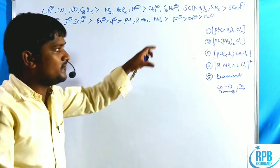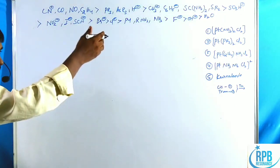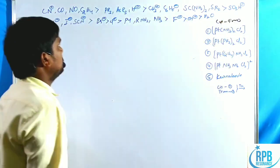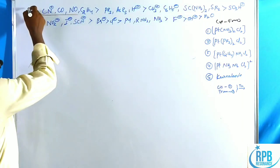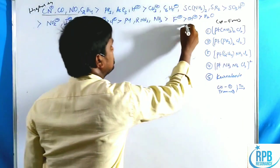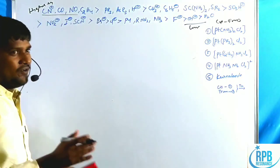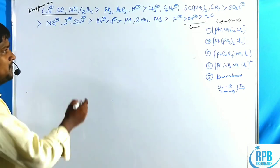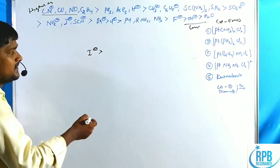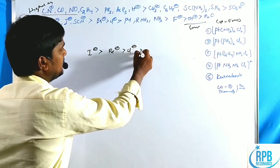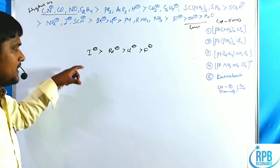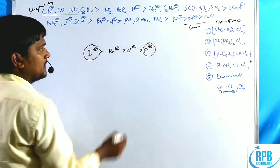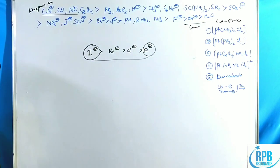Based on this order, we can synthesize cis and trans isomers of complexes. Pi acceptors are at the higher end and pi/sigma donors at the lower end of the trans-directing series. For halogens, the order I^- > Br^- > Cl^- > F^- follows from more to less polarization, which is opposite to the spectrochemical series order.